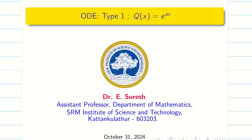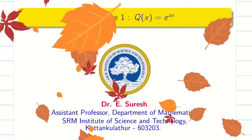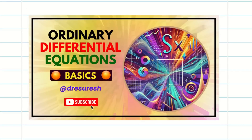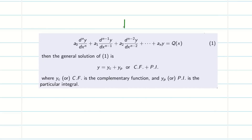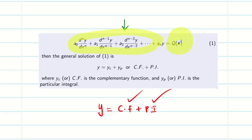Dear students, welcome to the problem solving session on ordinary differential equations. In the first session we covered the basics on ODE — definitions and the general solution. The nth order linear differential equation has a general solution of CF plus PI, where CF is the complementary function and PI is the particular integral. CF can be found from the LHS, and PI has to be found using the RHS, q(x).